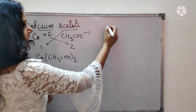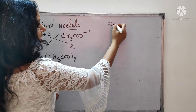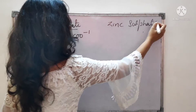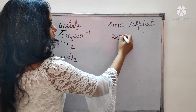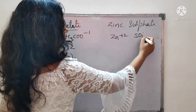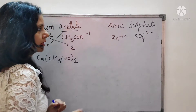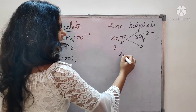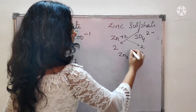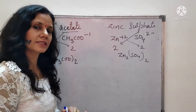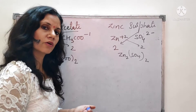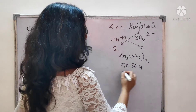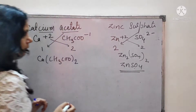Next example: zinc sulfate. Zinc is Zn2+ and sulfate is SO4 2−. Applying the criss-cross method gives Zn2(SO4)2, but since both numbers are the same, we can simplify. The formula becomes ZnSO4. That is the formula for zinc sulfate.